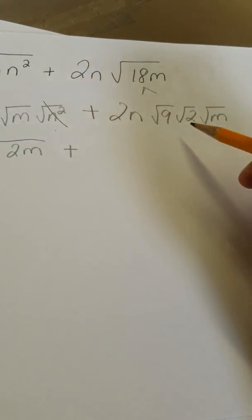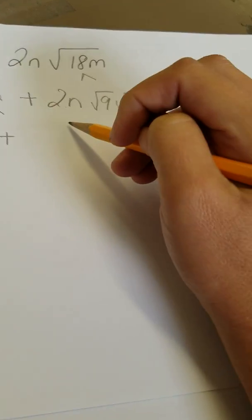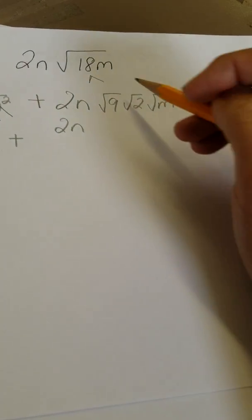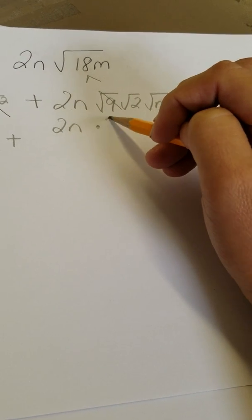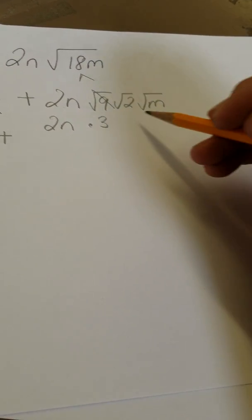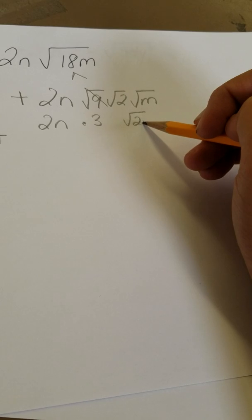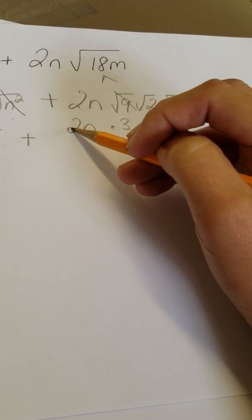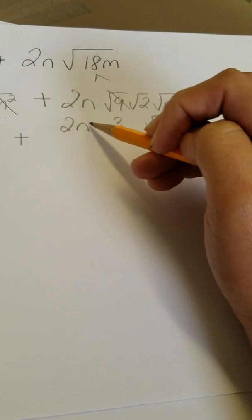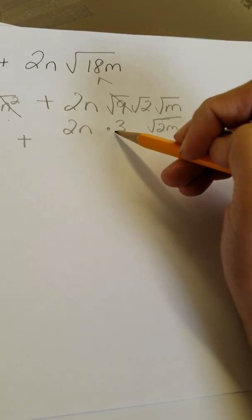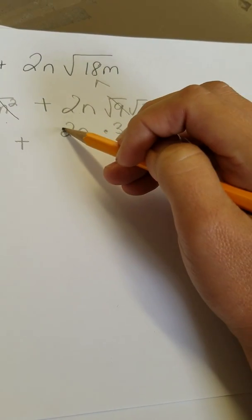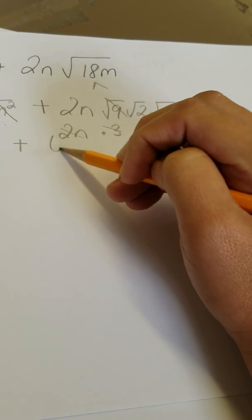Plus. Okay. This side is a little bit more complicated because of the coefficient. 2N squared root of 9 is 3. 2M is inside. Now we're almost done, but since we have a 2 and a 3, we can multiply these together. We can't add them together, but we can multiply.